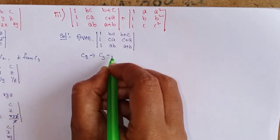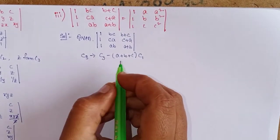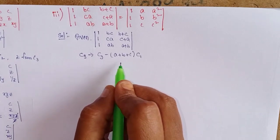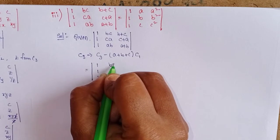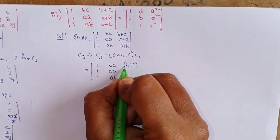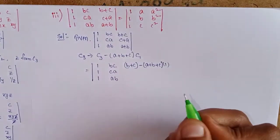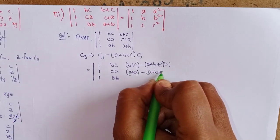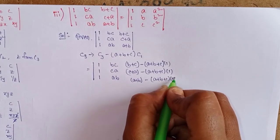In column 3, apply the operation C3 → C3 − (a+b+c)·C1. Write column 1 as it is, column 2 as it is. In column 3: row 1 gives (b+c) − (a+b+c)·1, row 2 gives (c+a) − (a+b+c)·1, row 3 gives (a+b) − (a+b+c)·1.